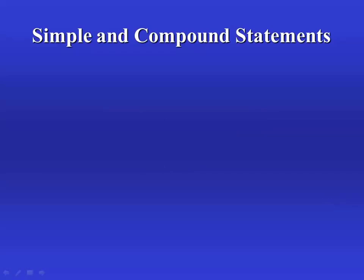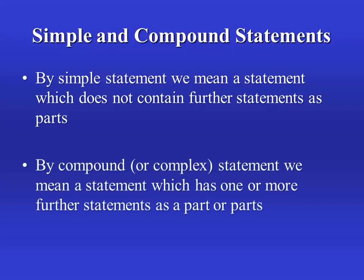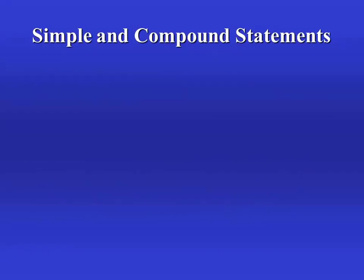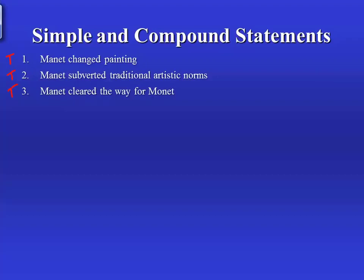A little bit about what we mean by simple versus a compound statement. The basic idea is that a simple statement is one which does not contain further statements as parts, whereas a compound statement does contain further statements as a part or parts. This is best illustrated with some examples. Our first three statements — Manet changed painting, Manet subverted traditional artistic norms, and Manet cleared the way for Monet — we will each count as simple statements. On the basis of a little bit of our knowledge of art history, we'll take each of these statements to be true. They don't have to be true to be simple statements, but that's just how we're working the example here.